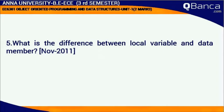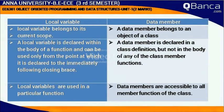Answer: A local variable belongs to its current scope; a data member belongs to an object or class. A local variable is declared within the body of a function and can be used from the point at which it is declared up to the immediately following closing brace. A data member is declared in a class definition but not in the body of any class member function. Local variables are used in a particular function; data members are accessible to all the member functions of the class.